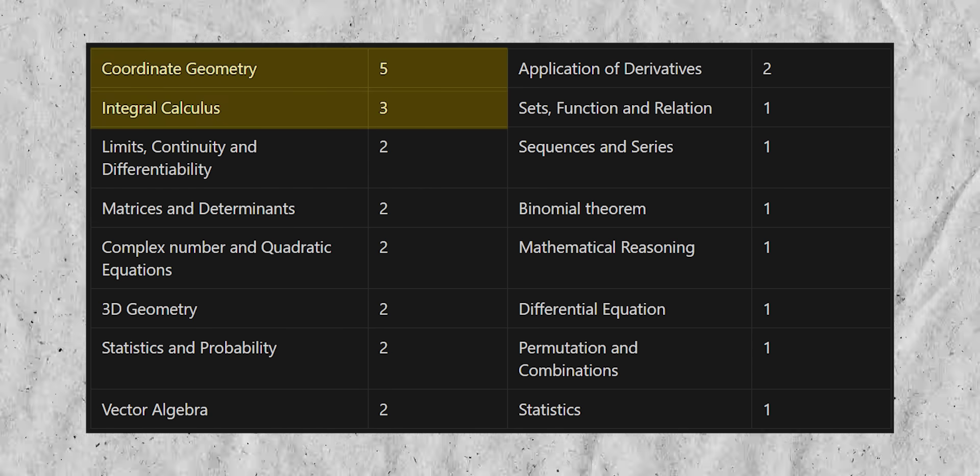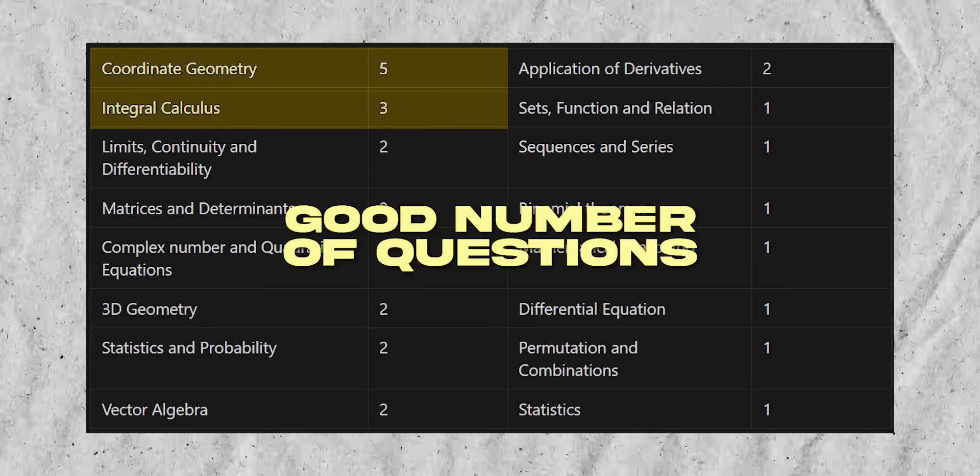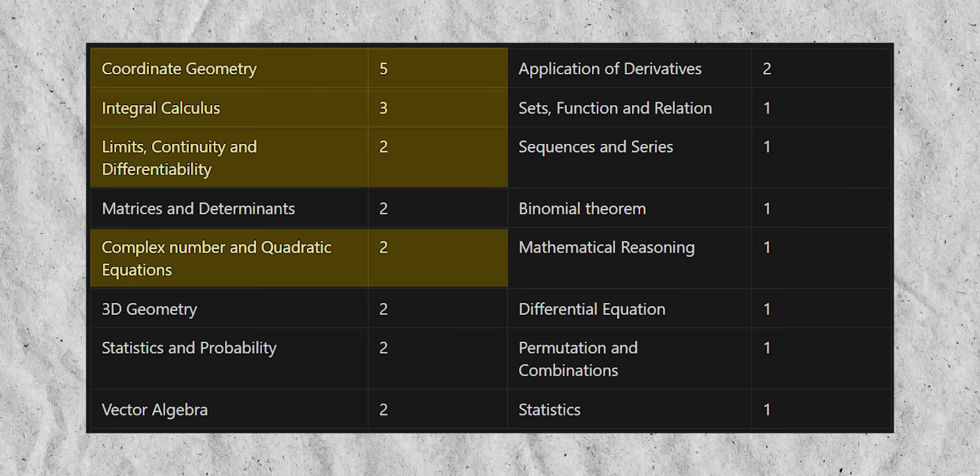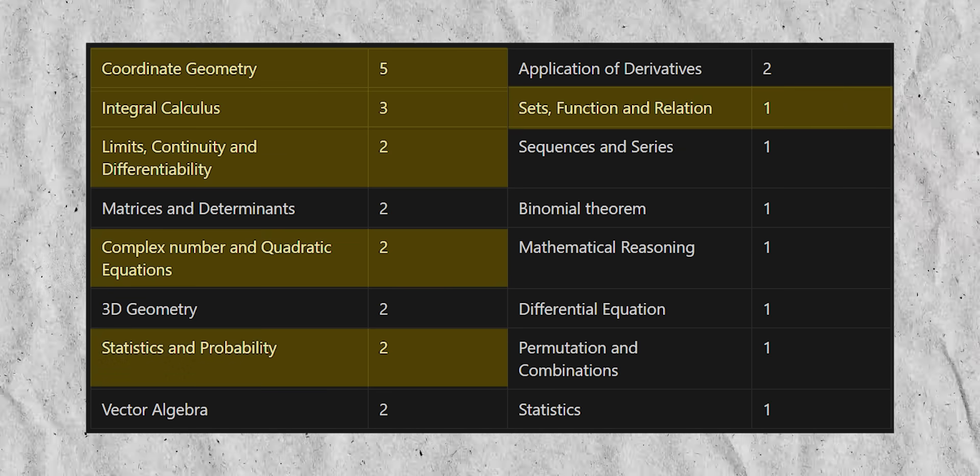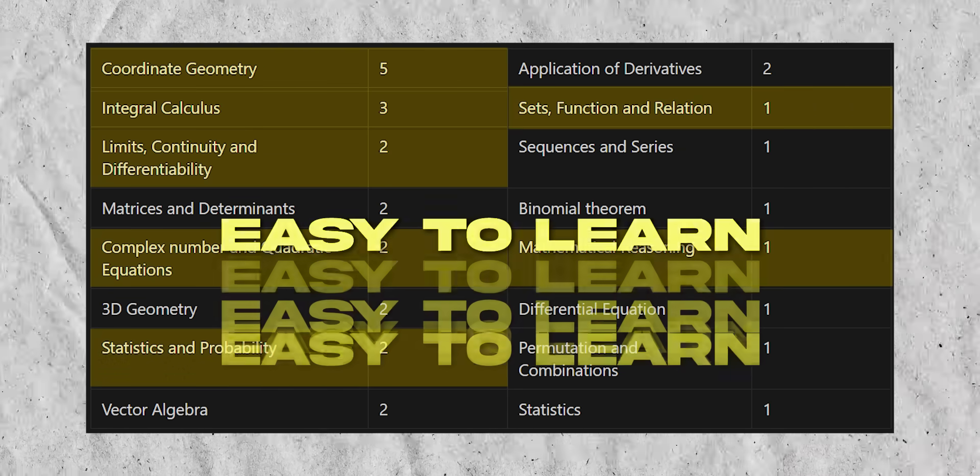Cool? Now let's talk about the chapters that will boost your score. So grab your pen back and start writing. Coordinate geometry and integral calculus contribute to a good number of questions. But oftentimes these questions are usually lengthy or they're tricky. So you need to be very fast and accurate while solving them. Topics like limits, quadratic equations, statistics, sets and relations, and mathematical reasoning. These chapters are very easy to learn. And every year, good number of questions keep coming from these chapters as well. So mind this. Just get done with these chapters.